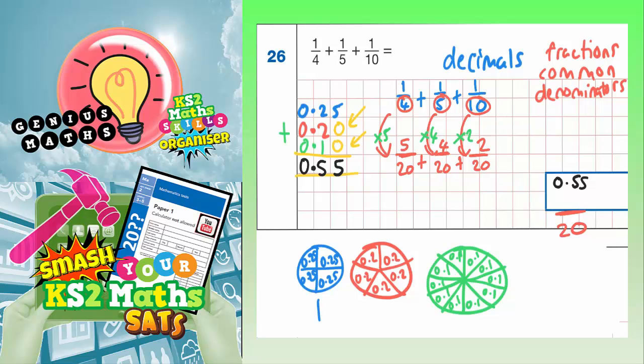So 5 20ths add 4 20ths add 2 20ths would be 11 20ths. So 0.55 is an answer as a decimal, or 11 20ths is an answer as a fraction with a common denominator.